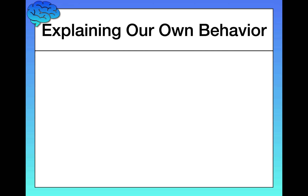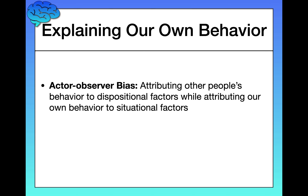Interestingly, when we have to explain our own behavior, we're much more likely to appeal to situational forces, likely because we feel the power they exert over us. We don't always know what circumstances a stranger is going through, and we usually don't try to guess. This is known as the actor-observer bias. When explaining other people's behavior, we appeal to their disposition — 'he's a careless driver.' But when explaining our own behavior, we appeal to the situation — 'I was just in a rush; it was the situation for me.'